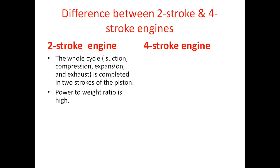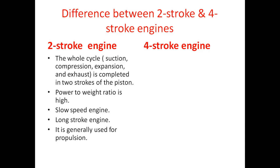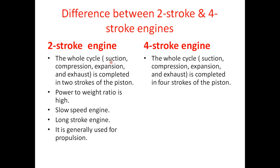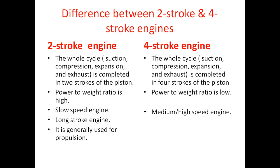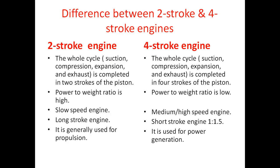In a two-stroke engine, the power-to-weight ratio is high. It is a slow-speed, long-stroke engine, generally used for propulsion. In a four-stroke engine, the whole cycle — suction, compression, expansion, and exhaust — is completed in four strokes of the piston. The power-to-weight ratio is low. It is a medium and high-speed, short-stroke engine with a ratio of 1 to 1.5, used for power generation.